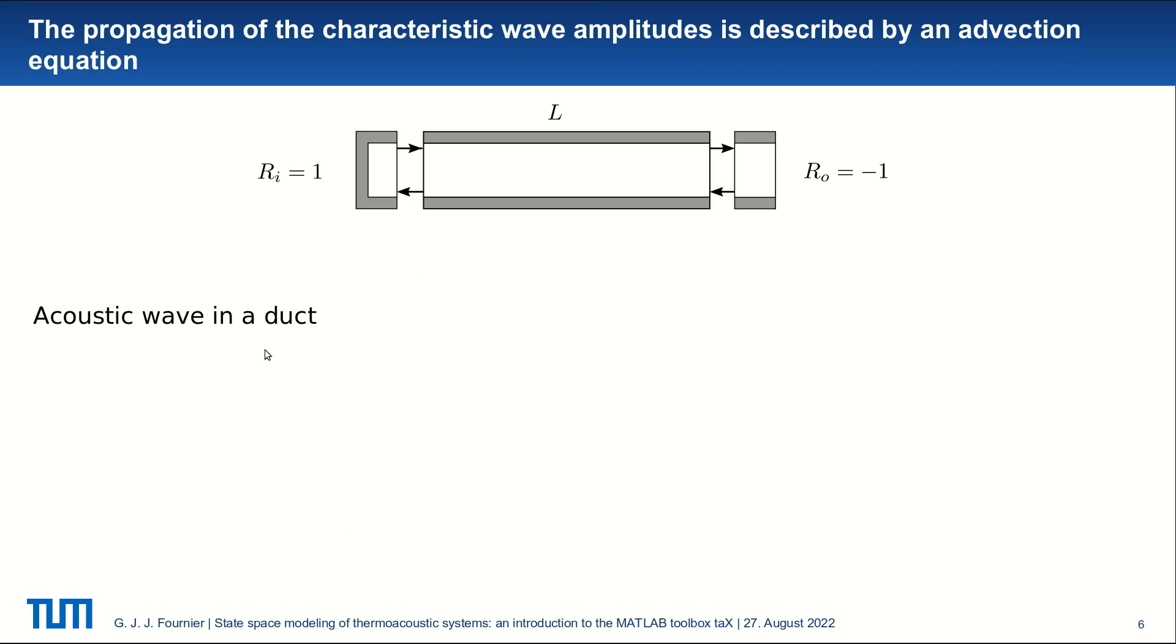So if we write the acoustic wave equation in our duct, we have this PDE. However, if we adopt a different point of view and look at the characteristic wave amplitudes F and G, they are described with an advection equation. We have df over dt equals minus c df over dx. And a similar equation for G, the change of sign is due to the fact that one is traveling in the downstream direction and the other is traveling in the upstream direction.